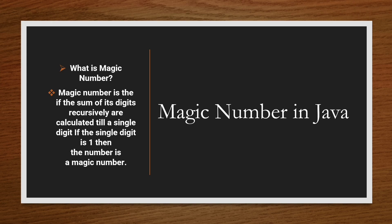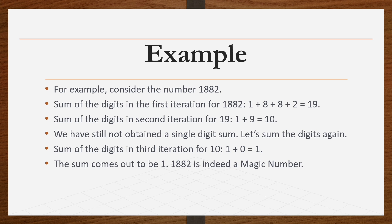Hello everyone, welcome to Bytecode School. Today we are going to start with a magic number. A magic number is a number where the sum of the digits is recursively calculated till a single digit, and if that digit is 1, then the number is a magic number. For example, let's consider the number 182: 1 plus 8 plus 2 equals 19. We do the sum again: 1 plus 9 equals 10, and then 1 plus 0 equals 1. If the result is 1, that is called a magic number.